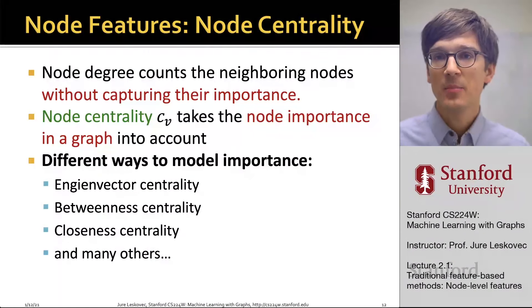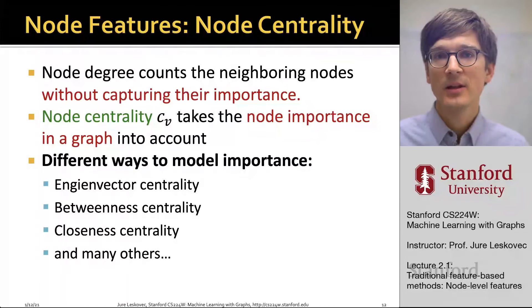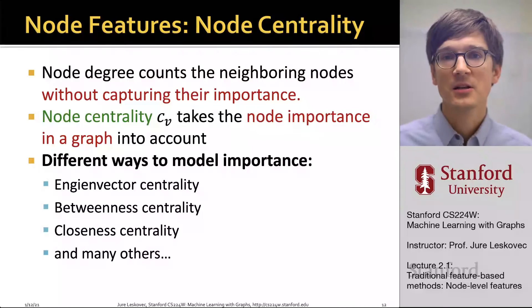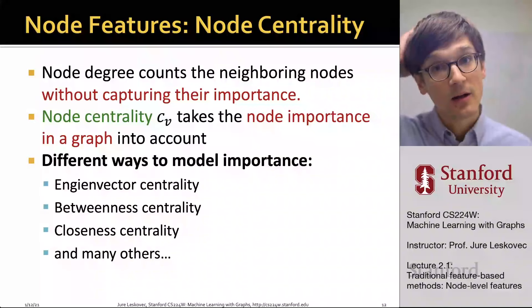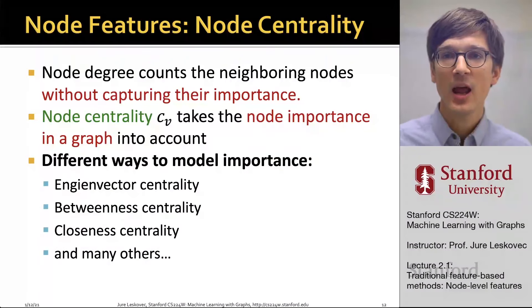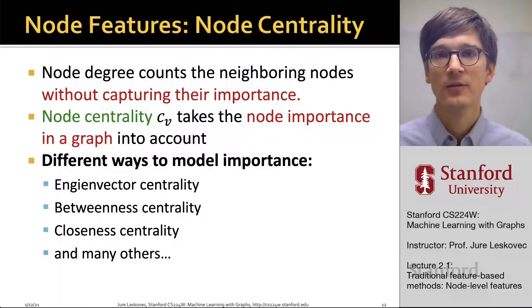Node degree only counts neighbors of the node without capturing their importance or who they really are. Node centrality measures try to capture and characterize how important a node is in the graph. There are many different ways to model this notion of importance. We are going to introduce eigenvector centrality, which we will further extend to the seminal PageRank algorithm later in the course. We will also talk about betweenness centrality, which tells us how important a connector a given node is, as well as closeness centrality, which captures how close to the center of the network a given node is.